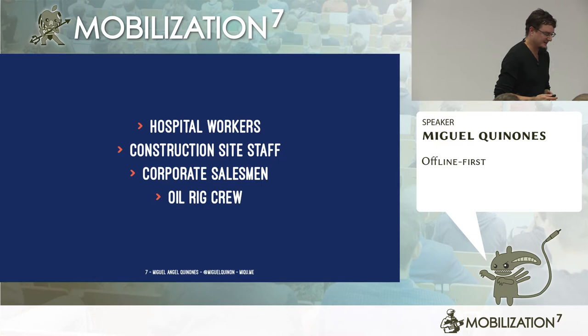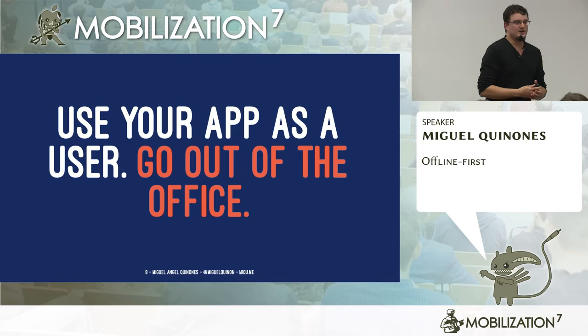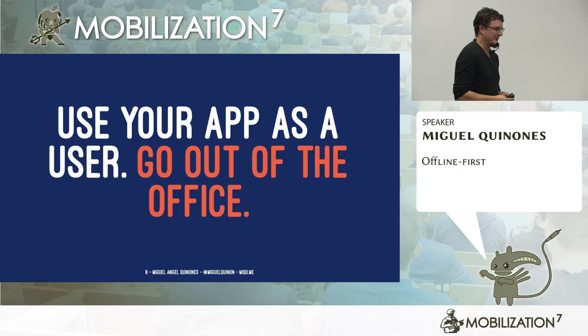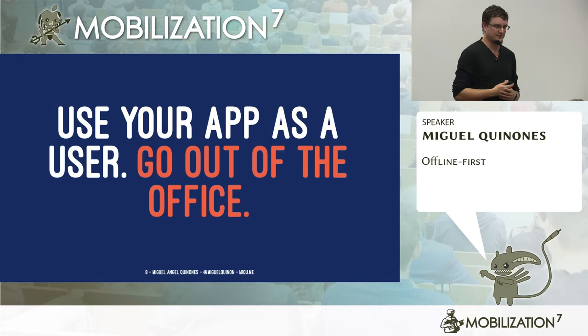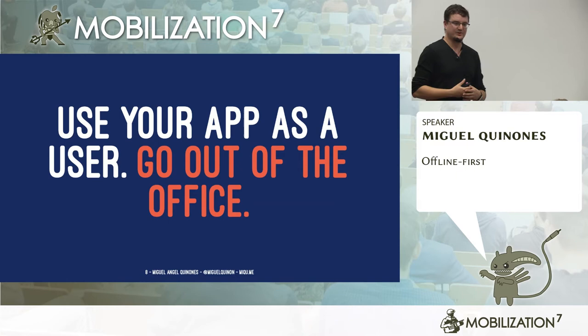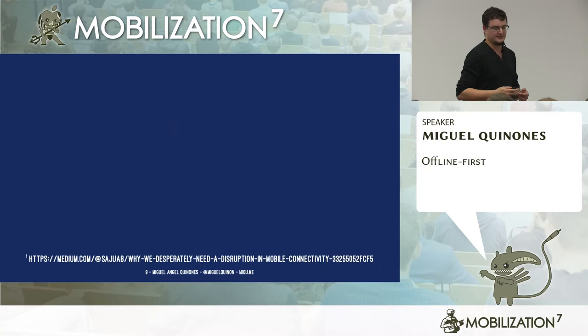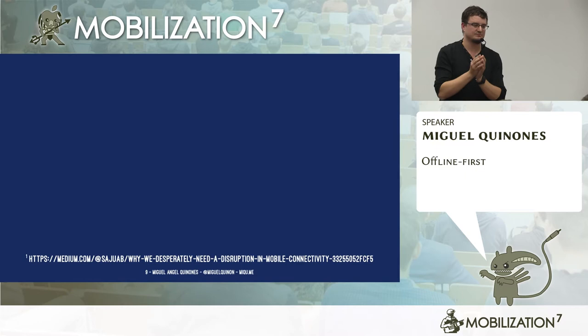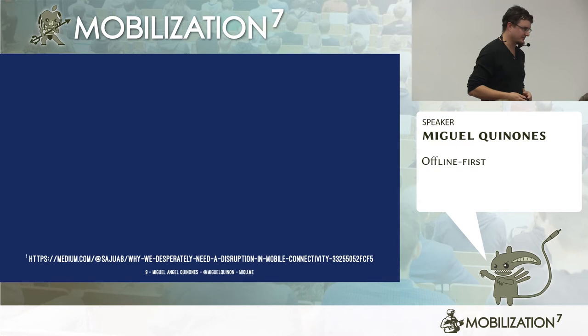There might be cases where it's a business value to have offline functionality. And the problem is — and I'm to blame many times — I never went out of my office and used the app as a user. One thing we should be doing is, for your app, even if you may not need full offline functionality, at least see if your users when they travel around on a train — is it as pleasant to use as in your office with a nice network connection?